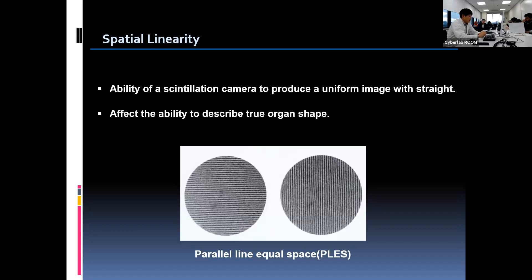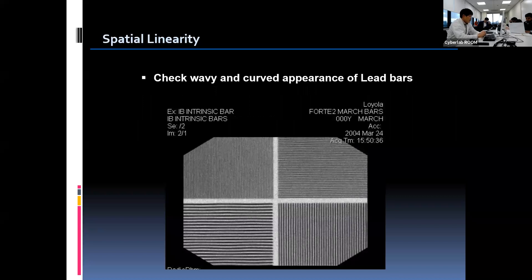The next procedure is the spatial linearity test. Spatial linearity refers to how well the camera produces images with straight lines — it is an important factor for describing true organ shape. These images are obtained with a parallel line equal space phantom where all lead bars and spaces have the same widths. Deviation from straight lines should be less than 1 millimeter. Linearity testing can be done along with resolution testing using the four-quadrant bar phantom. We check the straightness of parallel bars and review the image to see if there is any wavy or curved appearance.